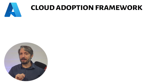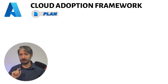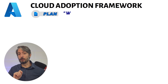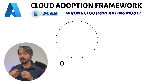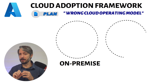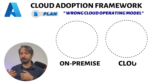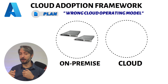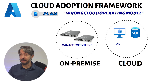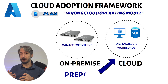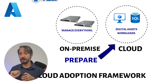In the plan pillar, there is an anti-pattern called wrong cloud operating model. This has everything to do with how a company operates and uses technology in the cloud. There is a big shift coming from traditional IT, where you manage and are responsible for the hardware, as opposed to the cloud, where the focus is on digital assets and workloads. Your company needs to be prepared for this shift and align the cloud operating model closer to the business.